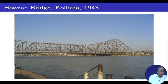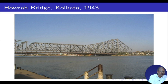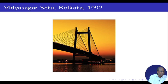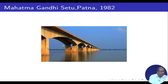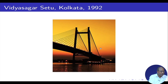Next is Howrah Bridge, Kolkata, 1943 — that is a steel bridge. This portion is the cantilever portion, and this is the suspended portion over it, with similar structure on both sides. Then there is the Mahatma Gandhi Setu in Patna, constructed in 1982, and the fourth one is the Vidyasagar Setu, Kolkata, 1992.